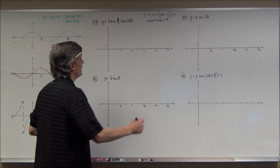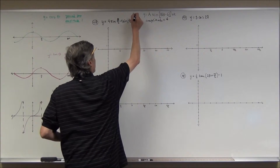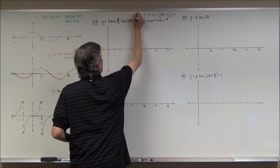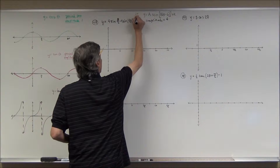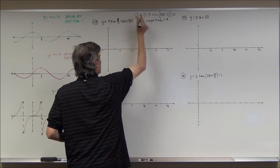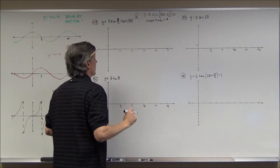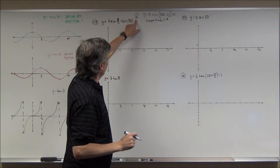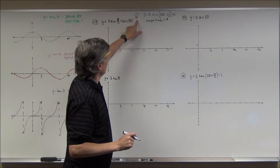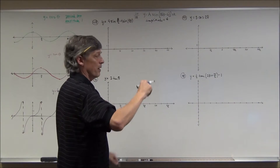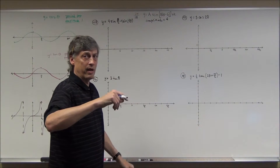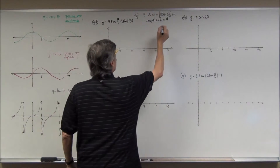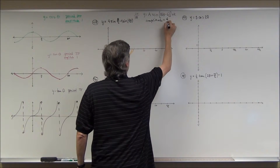To find the period, you take the period of the parent function — which is 2π — and divide it by the absolute value of B, just in case B is negative. So if I take 2π and divide it by one-half, that's 2π times 2, which equals 4π. So the period here is 4π.